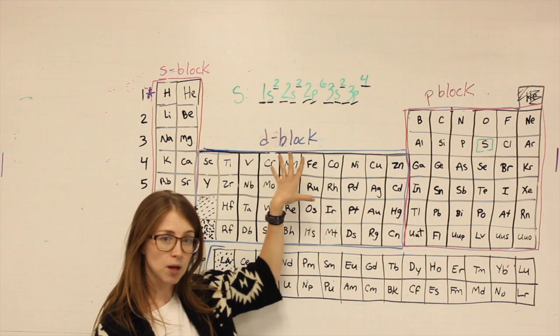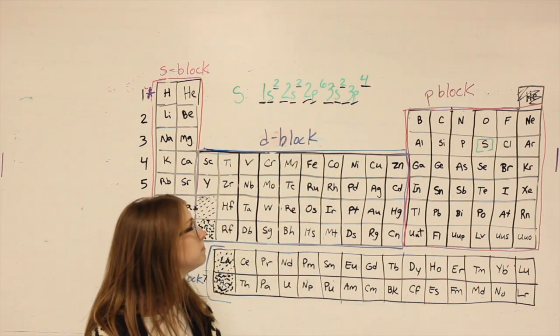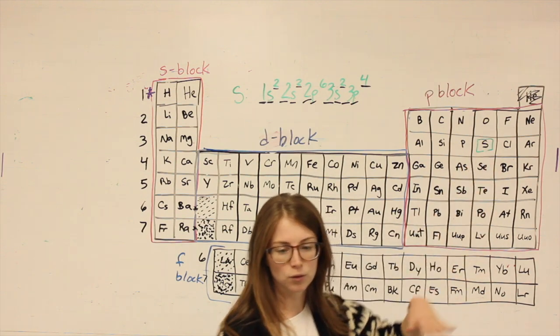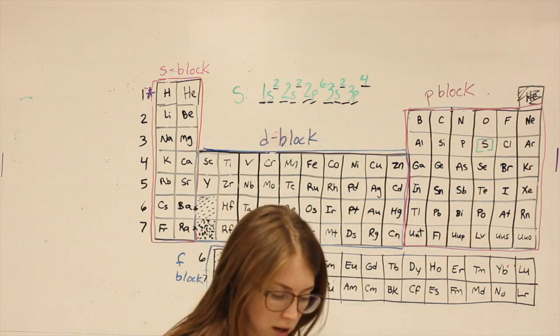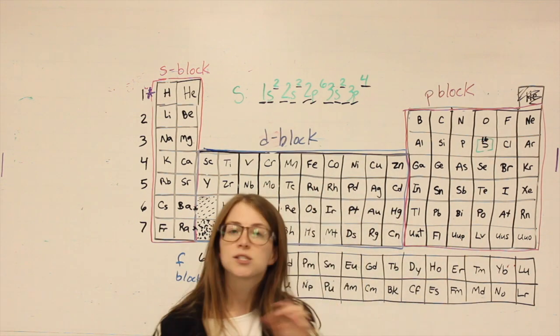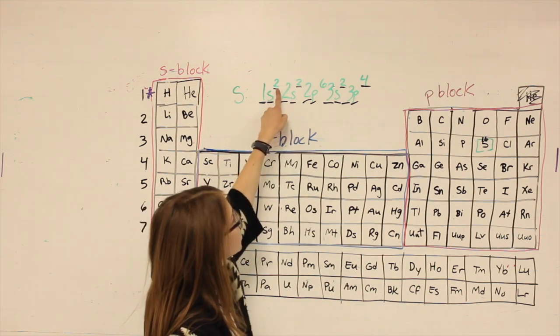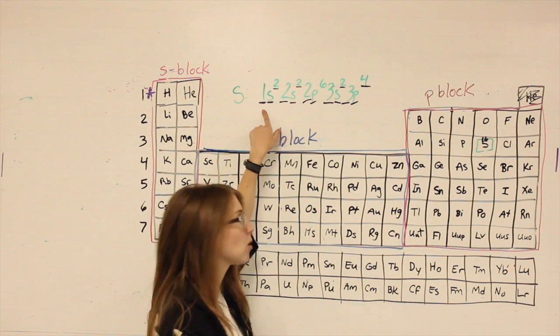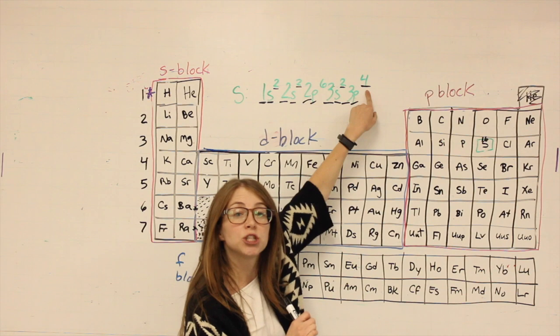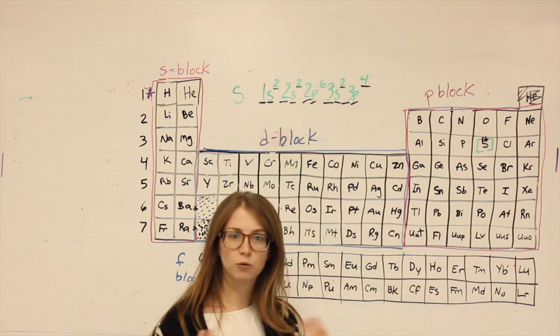It'll be a little different when we get to the D-block and a little different when we get to the F-block, but that's the general process. Realize each space is representing an electron. Sulfur, if you look at the actual periodic table, sulfur has the number 16 in that square at the top. That means sulfur has 16 electrons normally. Two of its electrons are in this 1s area. Two are here, six are there, two are there, four are there. So if you want to check your work, 2+2+6+2+4 should equal 16, or we did something wrong.